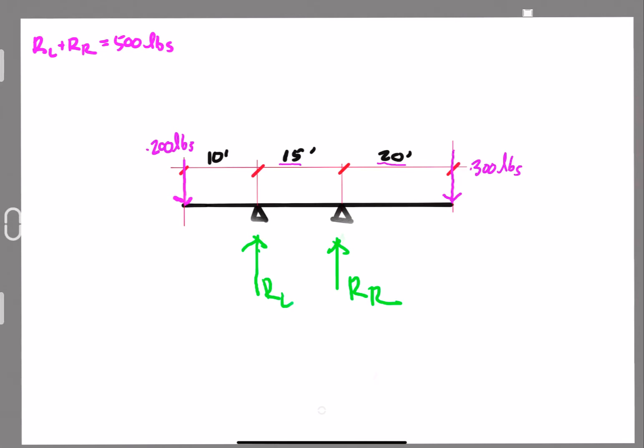Alright, to do that, we need to go to our moment equations. And what we'll do first is we'll look at the sum of the moments around reaction left. So we'll say sum of the moments left, this is a sigma, just a sloppy one. That has to equal zero.